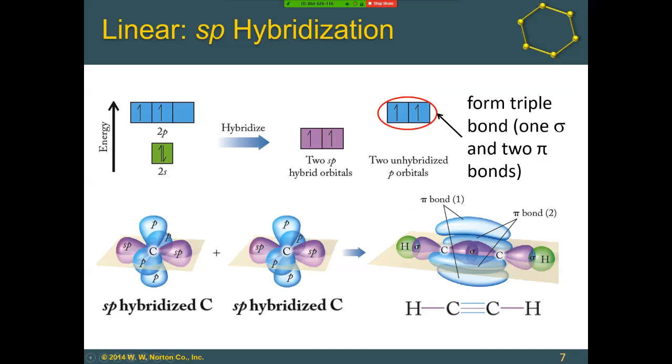Because the pi electrons are very exposed, this is a very reactive molecule. Acetylene is used for welding and special high-temperature torches.